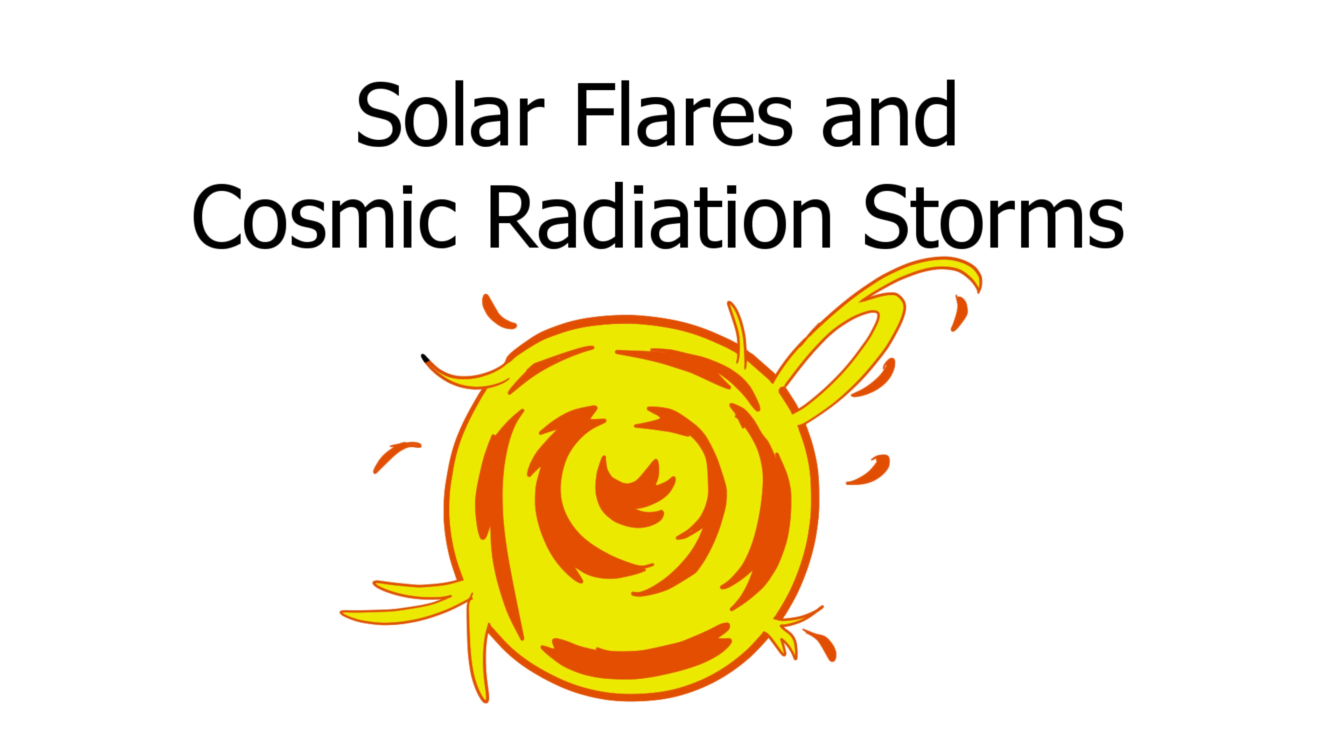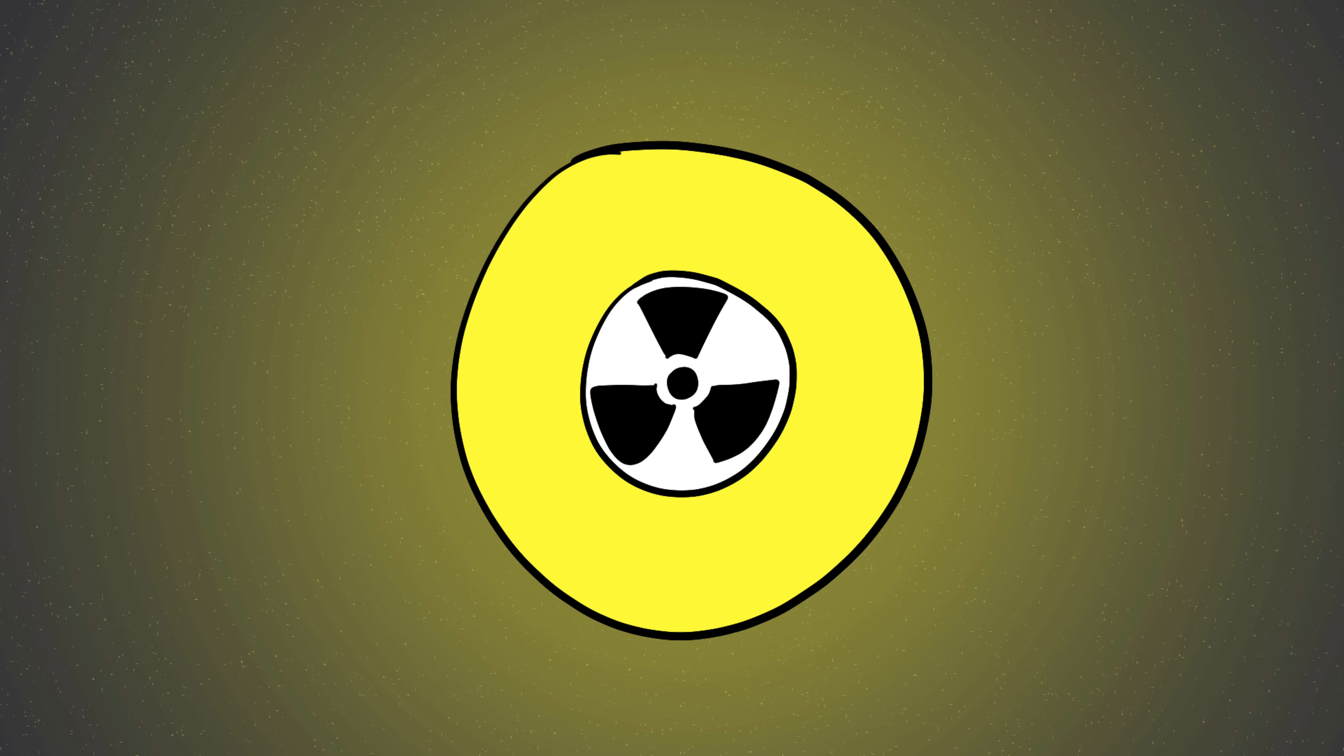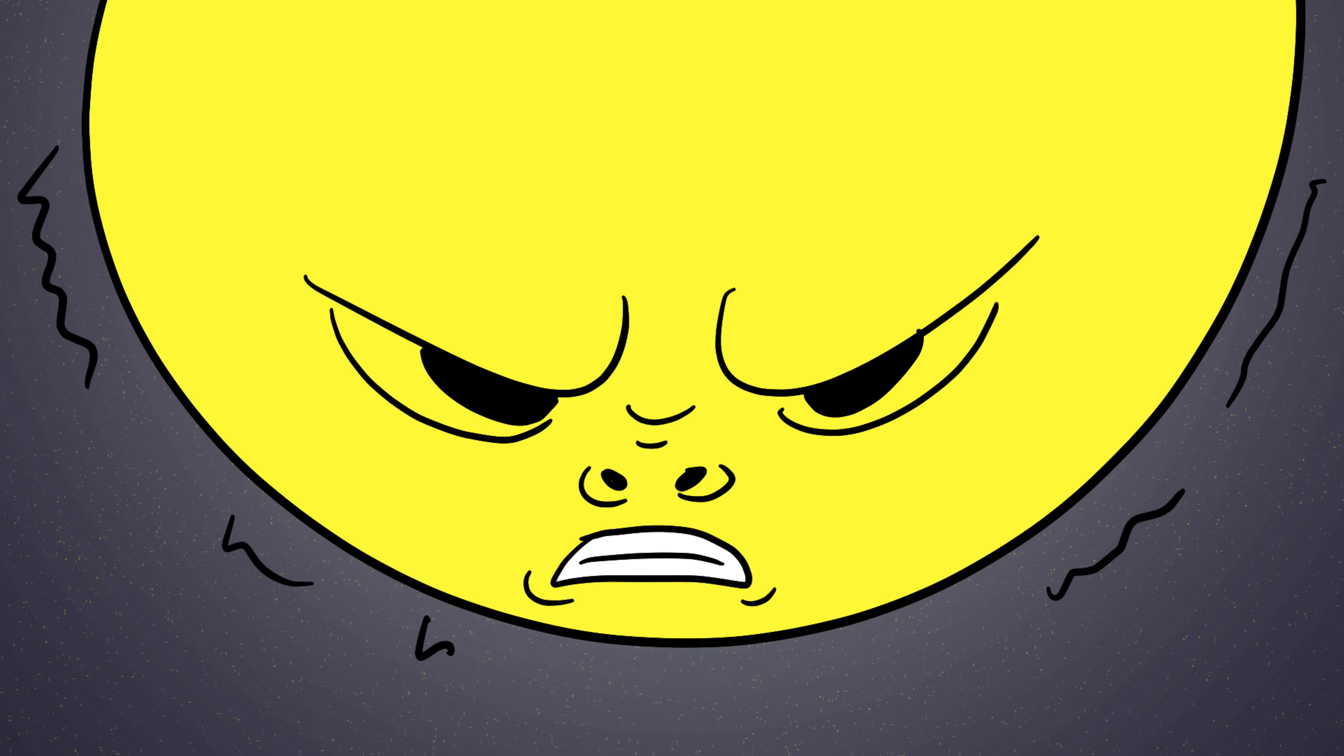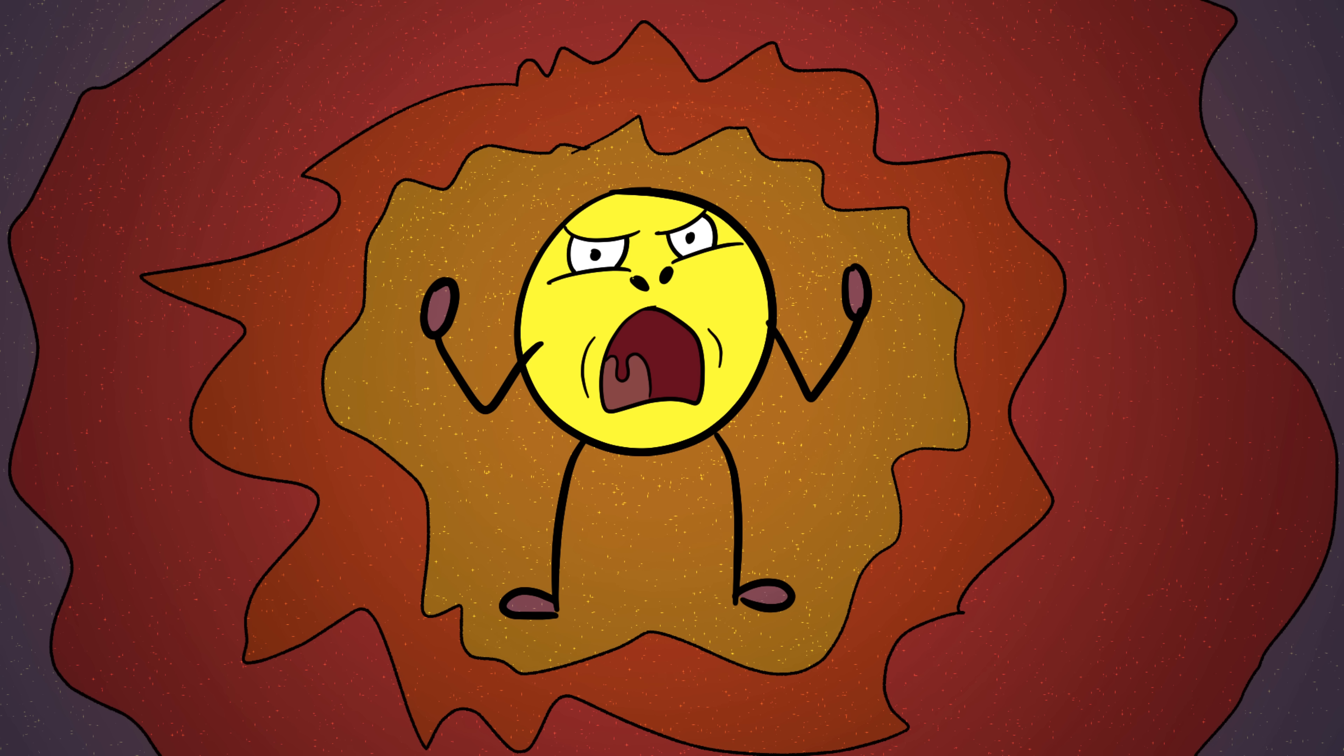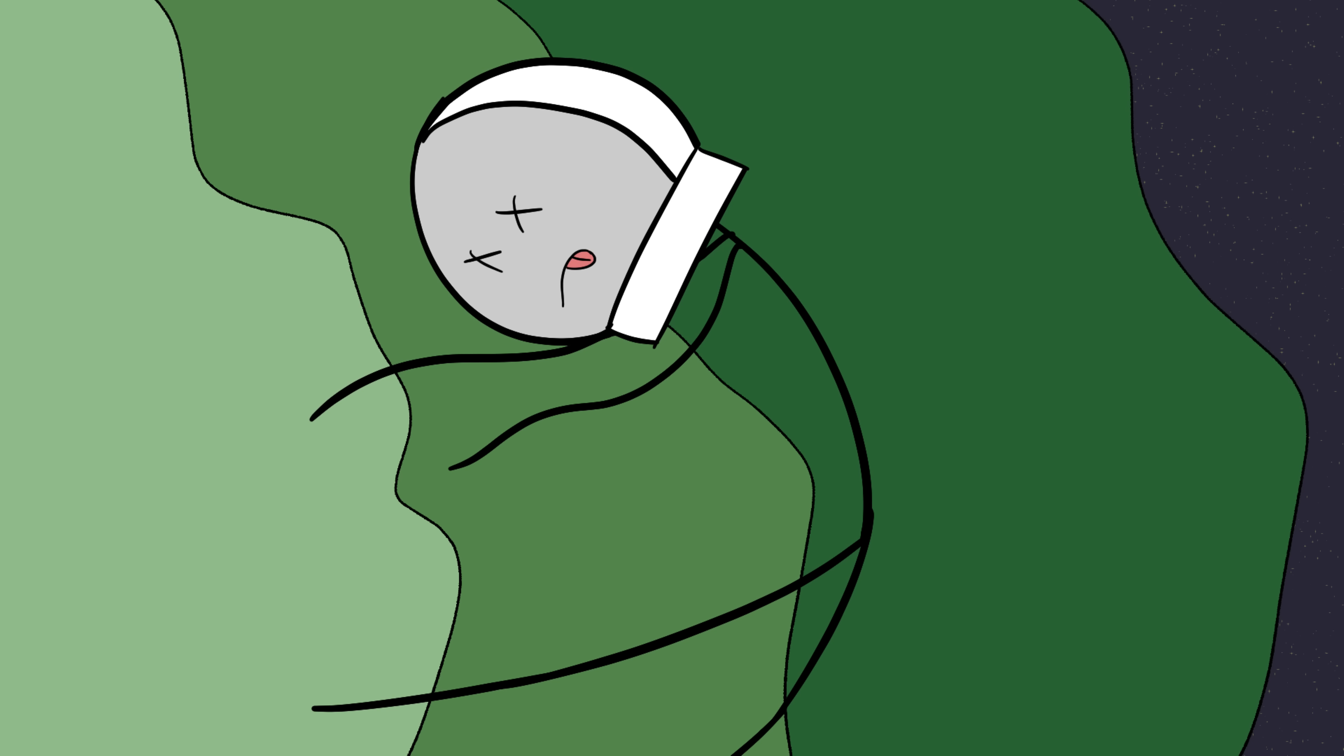Number one, solar flares and cosmic radiation storms. The sun looks nice and warm from Earth, but don't let it fool you. Our star is basically a giant nuclear reactor that occasionally loses its temper. Sometimes it spits out solar flare bursts of radiation so powerful they can fry satellites, knock out power grids, and bathe astronauts in deadly doses of radiation.